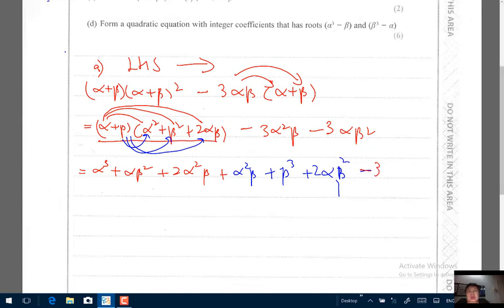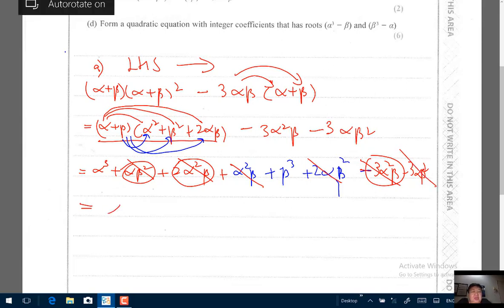minus 3α²β minus 3αβ². You will find that this one, this one and this will knock each other off. αβ² plus this will knock off this and finally you're left with α³ + β³.